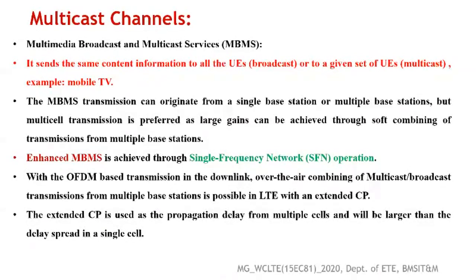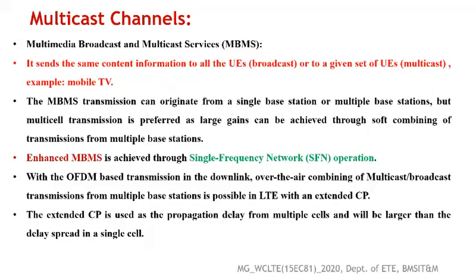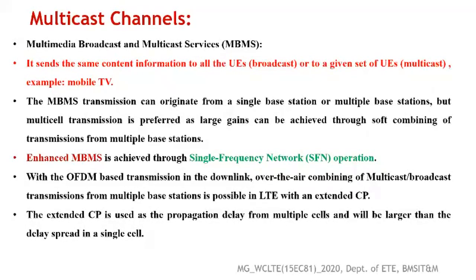In LTE, the downlink uses OFDM modulation, which makes it possible to combine over-the-air multicast or broadcast transmissions from multiple base stations using an extended cyclic prefix (extended CP). Specifically, the extended CP configuration is used for MBMS service. The extended CP is used as a propagation delay for multiple cells, and will be larger than the delay spread of a single cell. With the extended CP feature in LTE, it is possible to have enhanced MBMS with single frequency network operation.